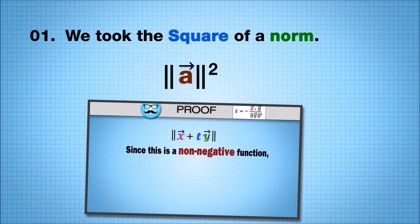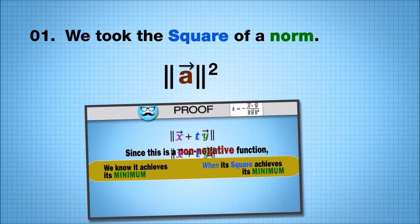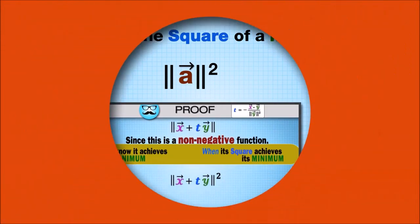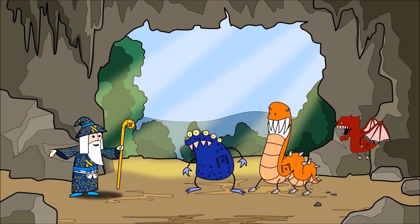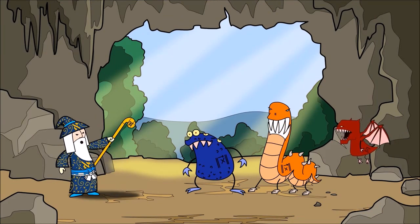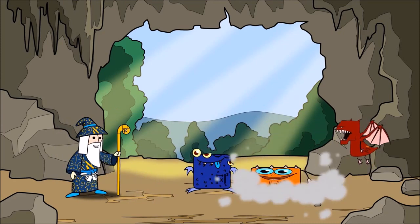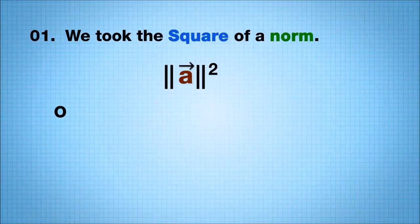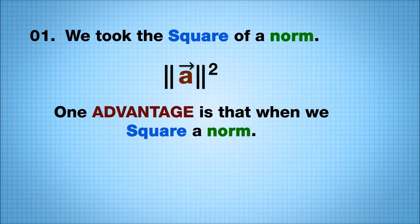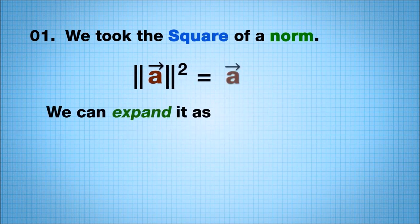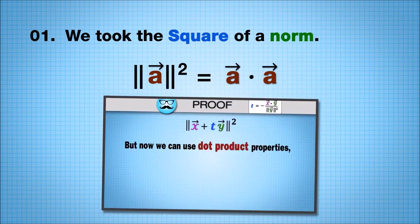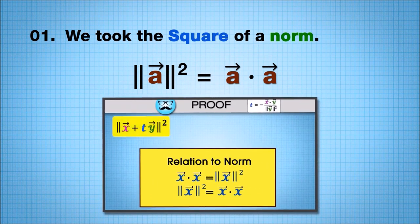First, we took the square of a norm. This trick is so important that it is worth immortalizing as a mantra. Math Mantra! When dealing with norms, it is often easier to work with their squares. One advantage is that when we square a norm, we can expand it as a dot product. This allows us to exploit dot product properties.